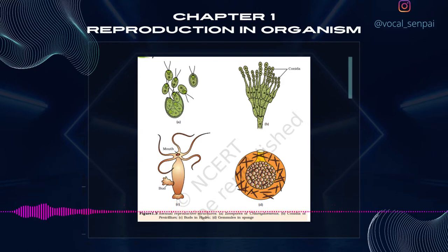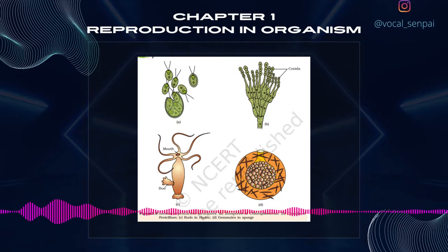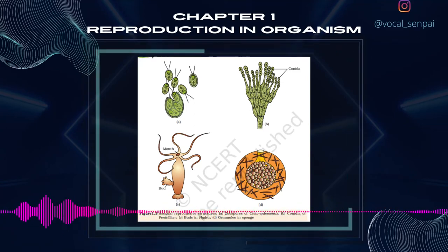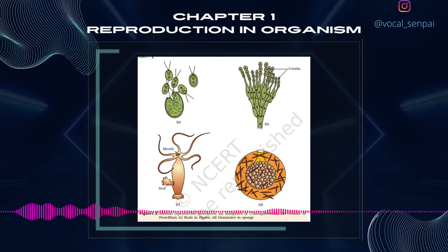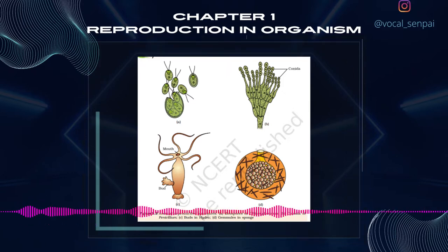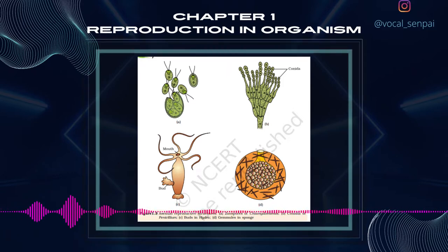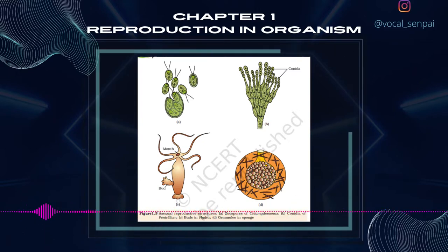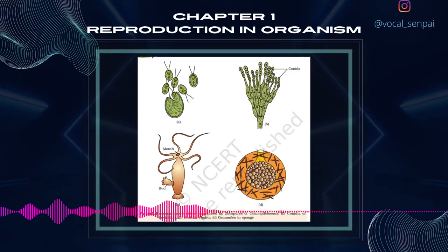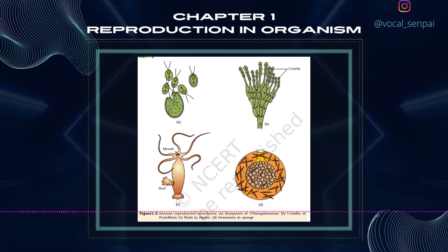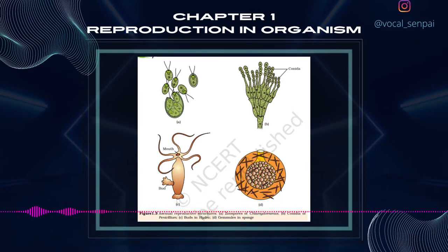You have learnt about vegetative reproduction in plants in class 11. Is vegetative reproduction also a type of asexual reproduction? Is the term clone applicable to the offspring formed by vegetative reproduction? While in animals and other simple organisms the term asexual is used unambiguously, in plants, the term vegetative reproduction is frequently used. In plants, the units of vegetative propagation such as runner, rhizome, sucker, tuber, offset and bulb are all capable of giving rise to new offspring, figure 1.4. These structures are called vegetative propagules. Since the formation of these structures does not involve two parents, the process involved is asexual.